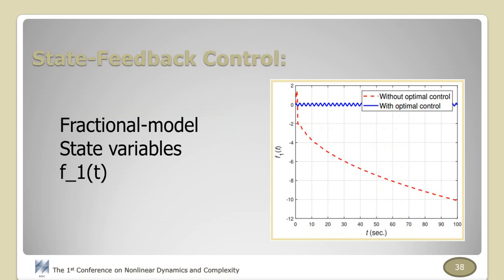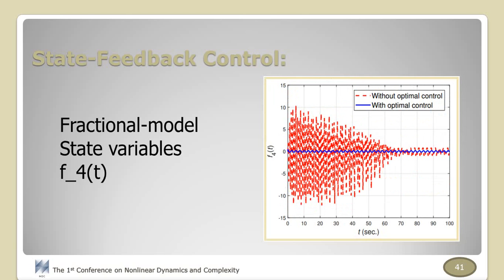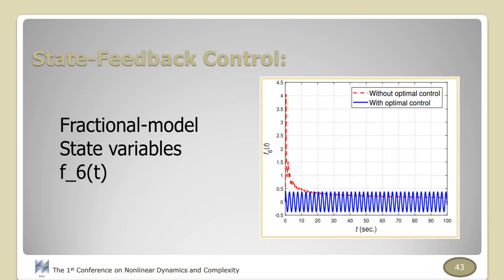And this shows the controlled and uncontrolled state variables, and other figures also show the state variables of the system: F2, F3, F4, F5, and finally F6. These figures show that the hyperchaotic behaviors of the fractional non-autonomous cardiac oscillator are controlled by the presented optimal controller. So the controlled fractional cardiac system reveals stable periodic solutions.